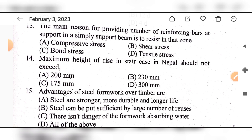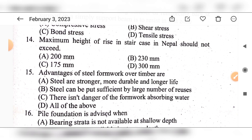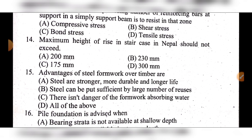Question 15: Advantages of steel framework over timber are — option A: steel is stronger, more durable and has longer life; option B: steel can be reused a large number of times; option C: there is no danger of the framework absorbing water; option D: all of the above. The answer is option D: all of the above.